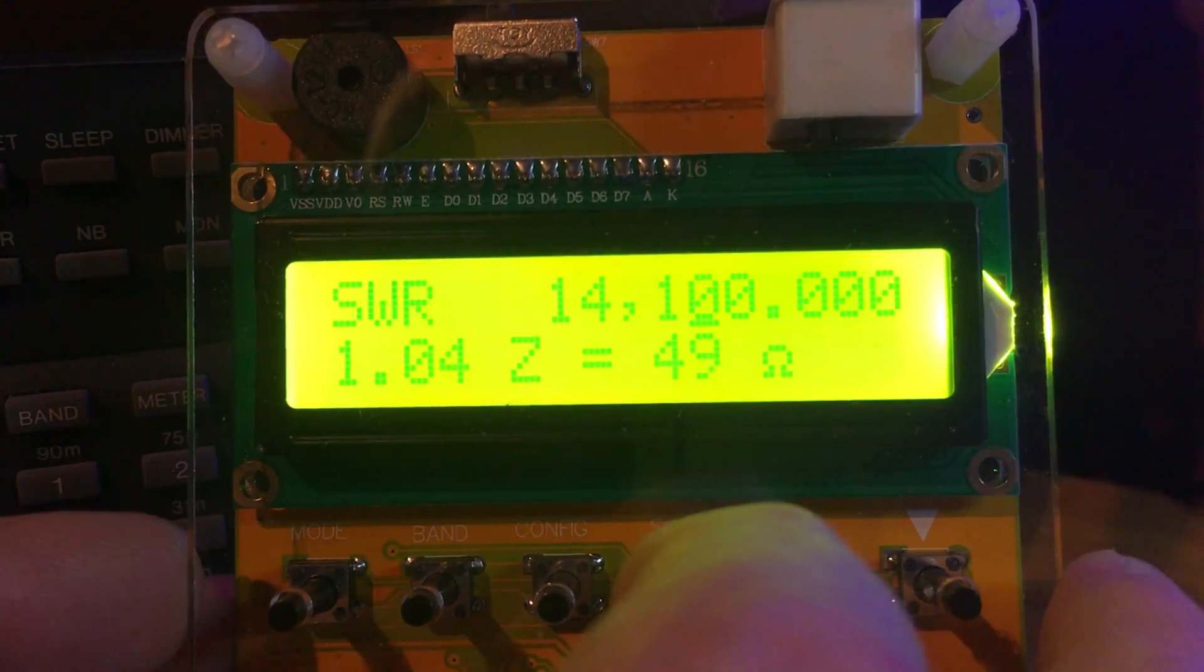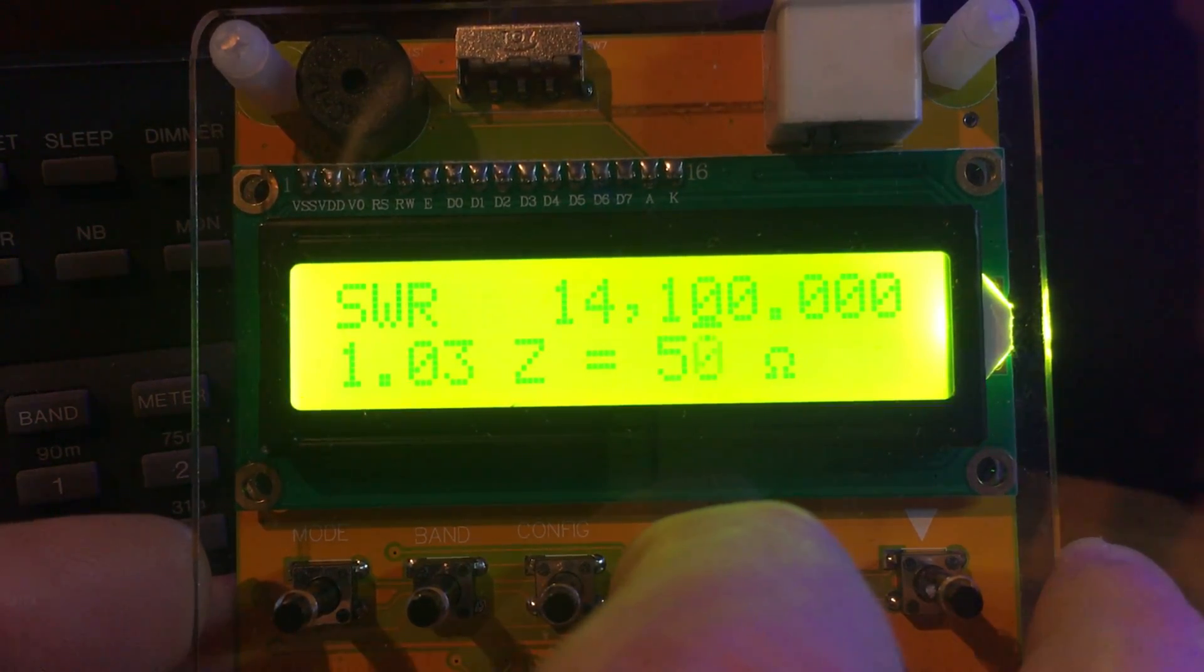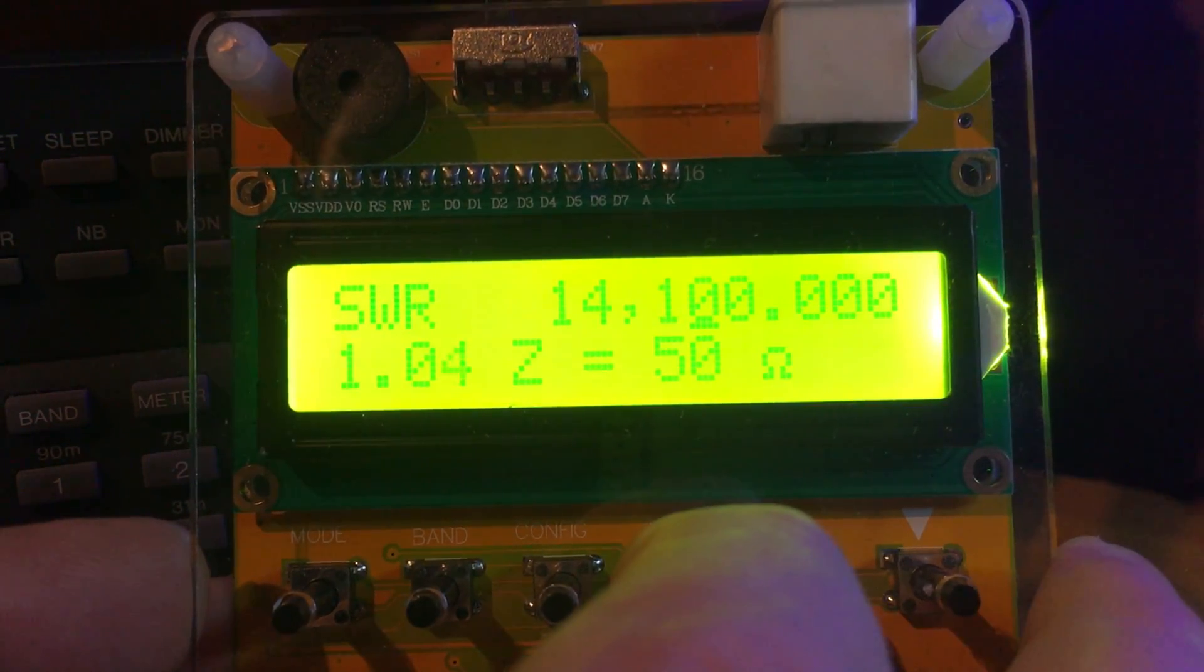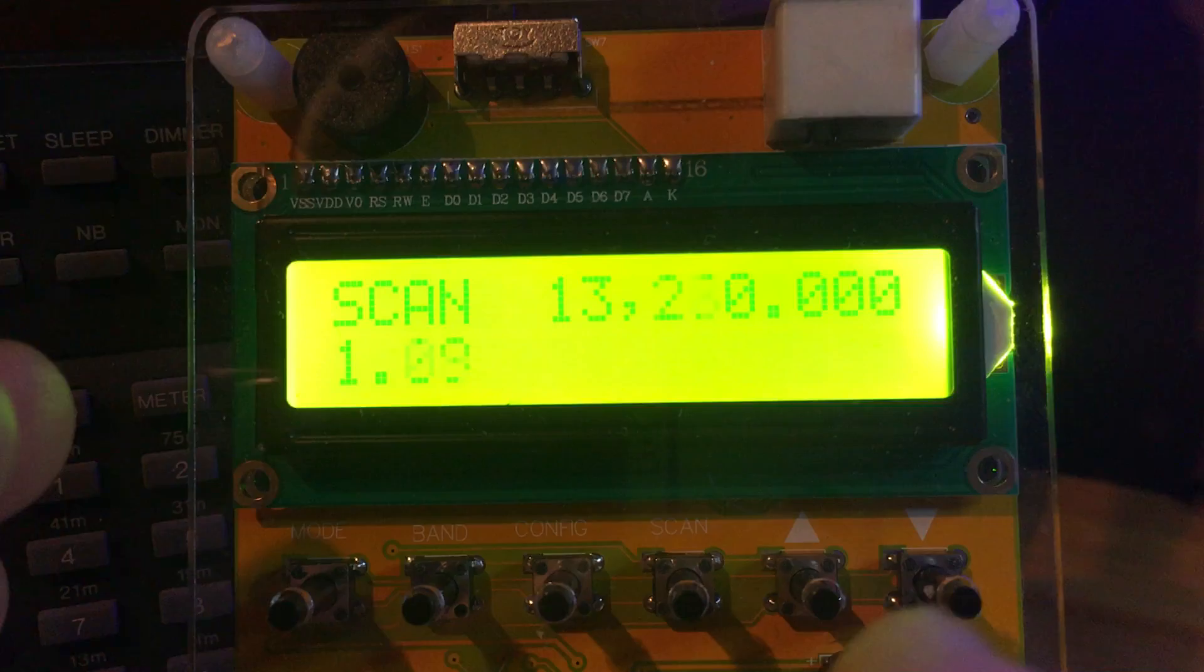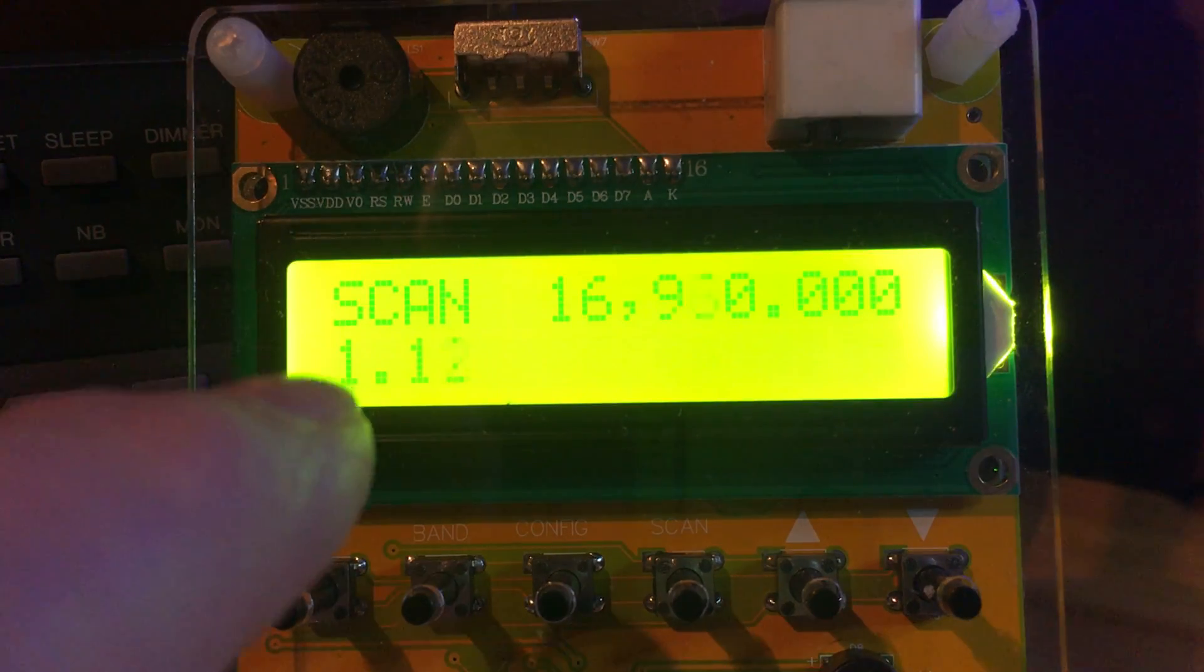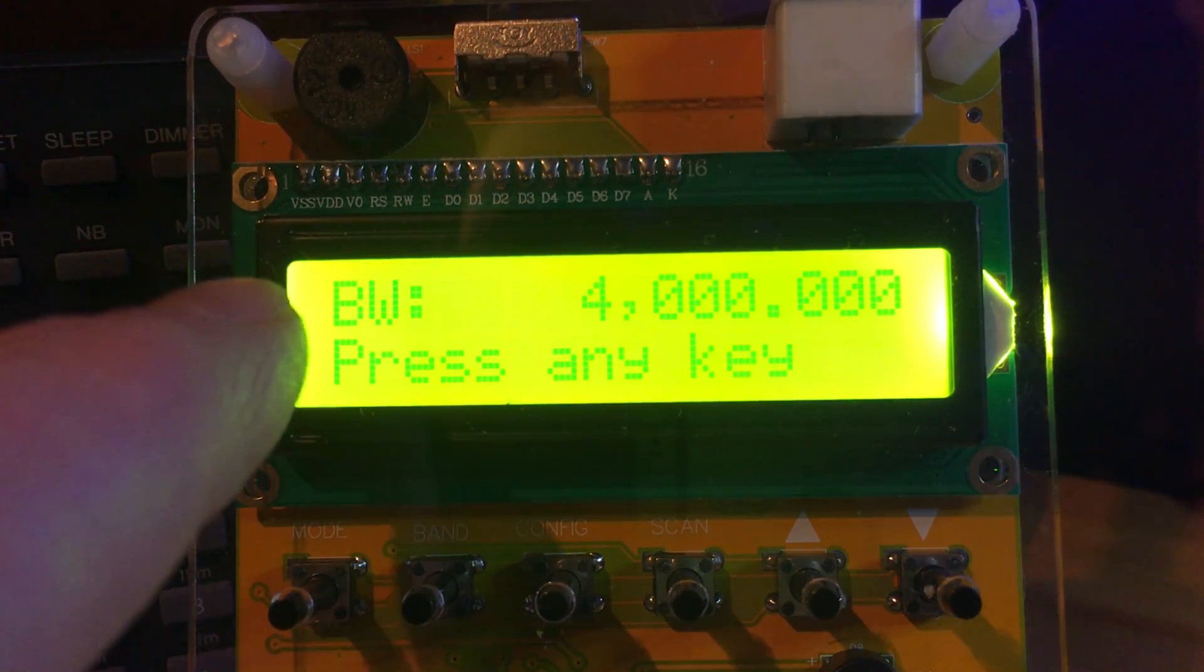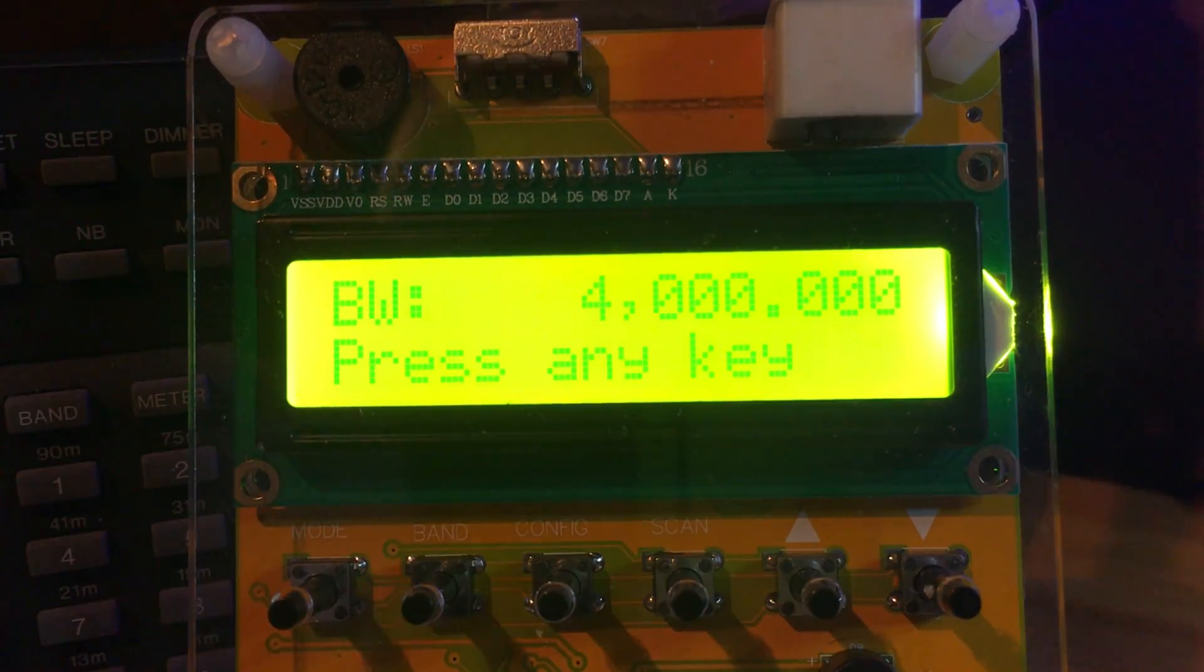Now I'll show you the scan. Now bearing in mind around 20 meters, if we press the scan button, it'll go through the whole band to see what frequency is the best resonant for this antenna. So we start all the way down at 13 megahertz, and it'll scan the whole band now to 20 meters. As you can see, the SWR at the side there. The bandwidth, BW stands for bandwidth, so you've got 4 megahertz bandwidth that it's just tested.